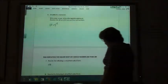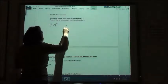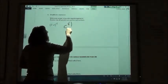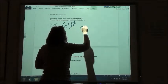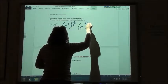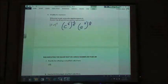So number six, again, we're raising to a power, so we're going to multiply our exponents. We've got c to the one-fourth, and we're going to raise that to the negative two-fifths. And then we've got a to the fifth, and we're going to raise that to the negative two-fifths. So one-fourth times negative two-fifths.